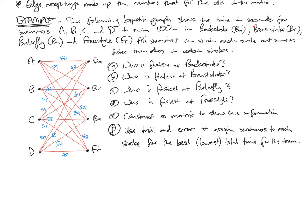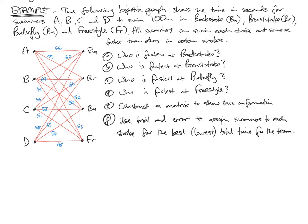So the following bipartite graph shows the time in seconds for swimmers A, B, C, and D on this side to swim 100 meters in the different strokes: backstroke, breaststroke, butterfly, and freestyle over here. So those are the two groups making up the bipartite graph. All swimmers can swim each stroke, but the weights indicate how long it took them to swim 100 meters. So therefore they've got some swimmers faster than others in certain strokes. We've got a series of questions here to help us see what it's like interpreting information from this weighted bipartite graph and also give us a chance to represent this bipartite graph with a matrix and then one other opportunity to use trial and error to see if we can just do a basic optimization of that matrix.